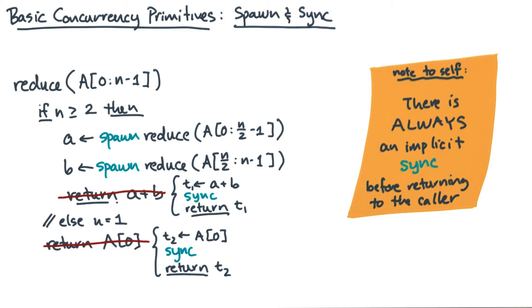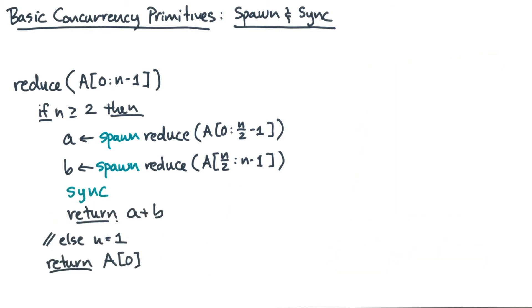Now, the fact of implicit syncs will constrain the kinds of DAGs that this programming model can produce. The style of parallelism in such DAGs is sometimes called nested parallelism. Once you see how this pseudocode gives rise to a DAG, you'll understand where the term nested parallelism comes from.